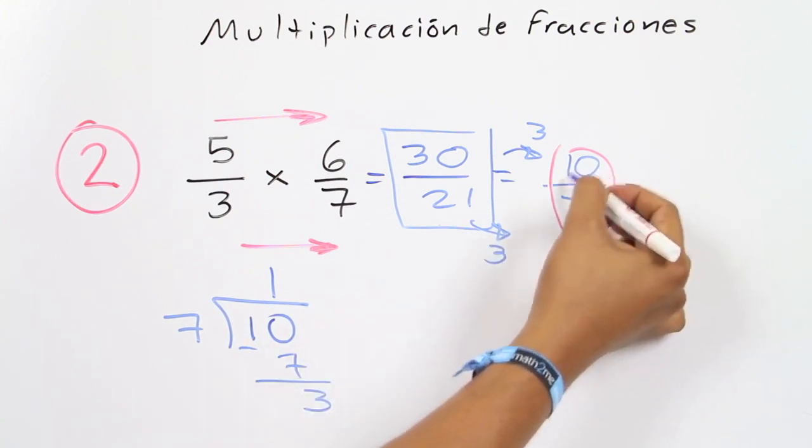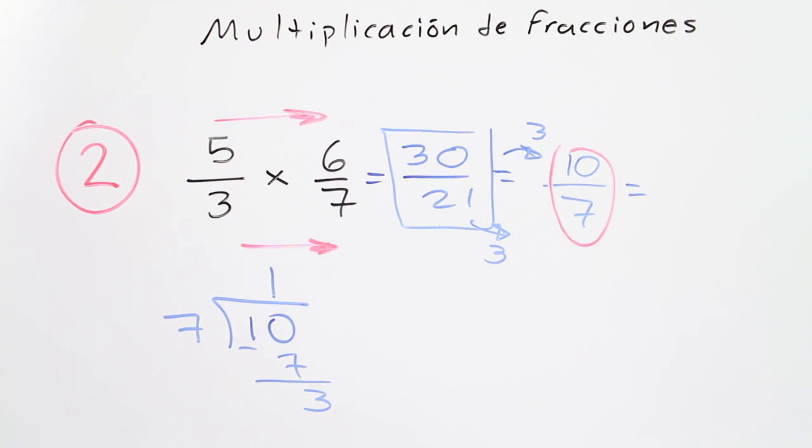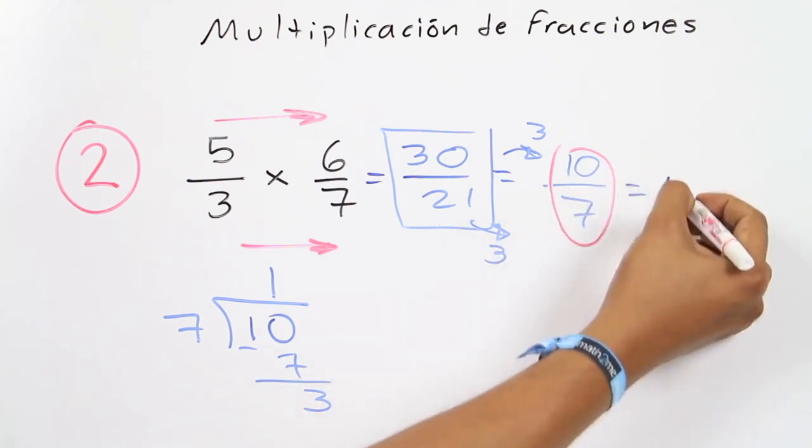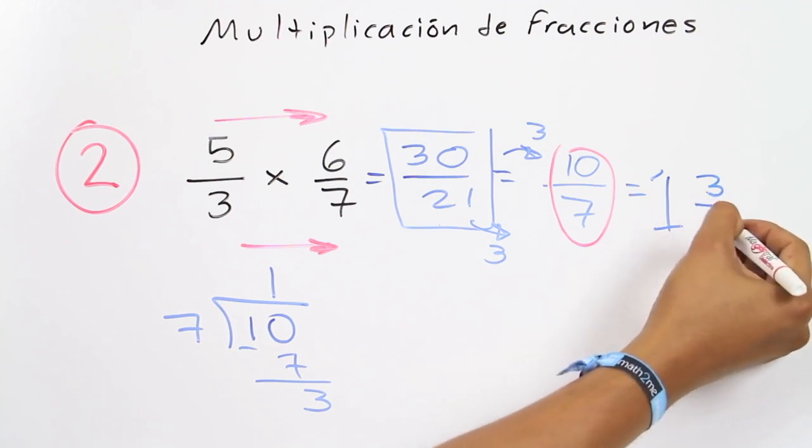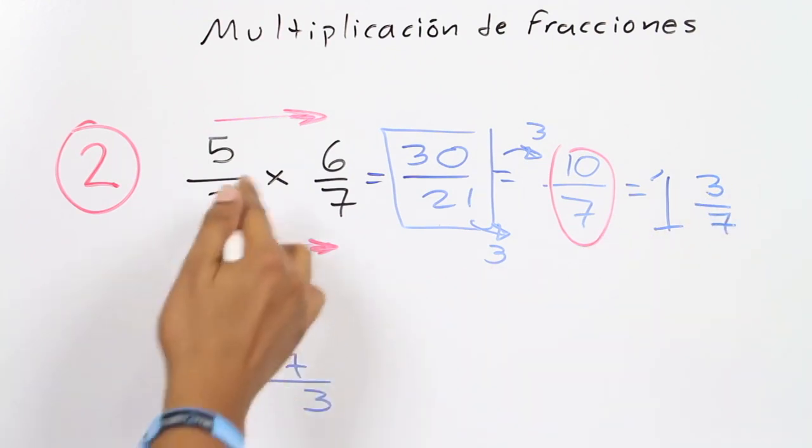So the mixed fraction will start with a whole number, in this case is 1. Then the numerator will be the remainder, that is 3, staying with the same denominator, that is 7.